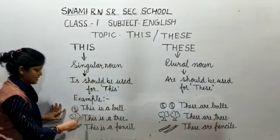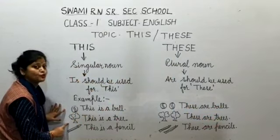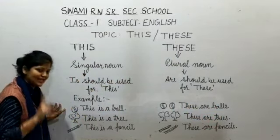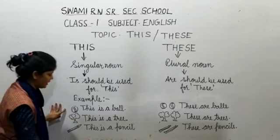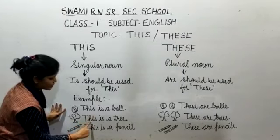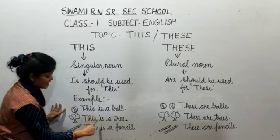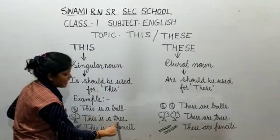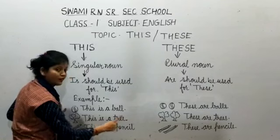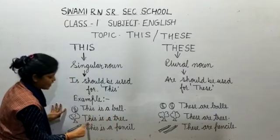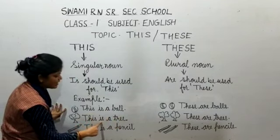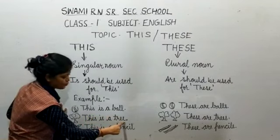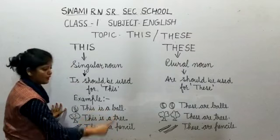Next one. What is this? Tree — only a single tree, so we will use 'this'. All of you read with me: This is a tree.